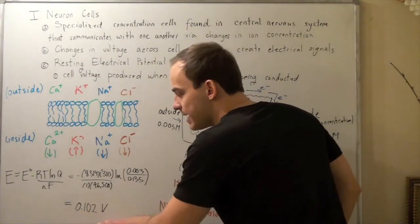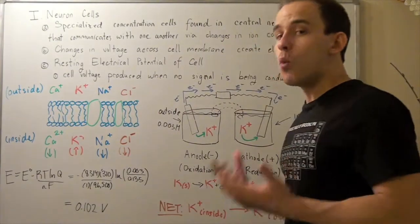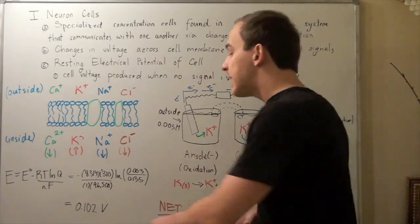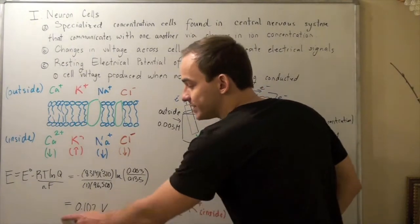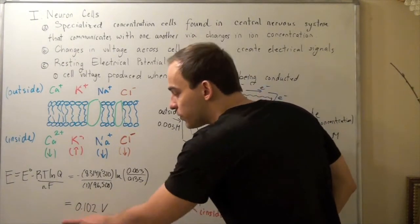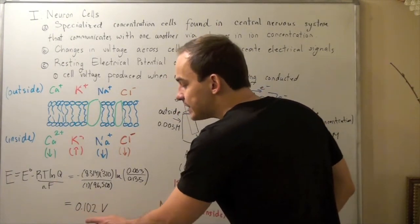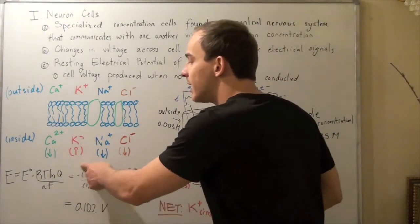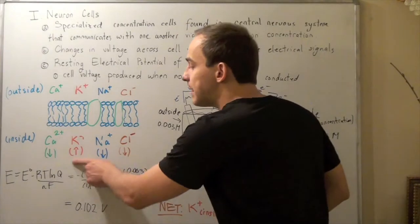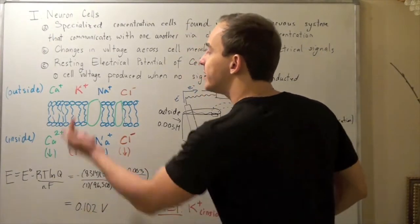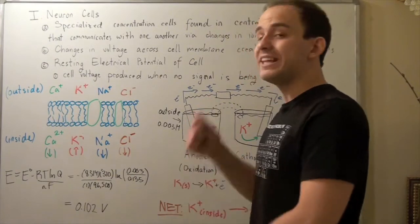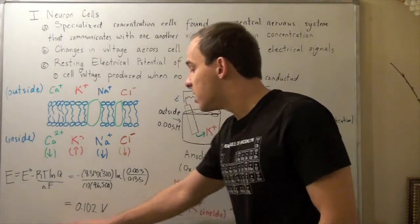Now, what this number means is that when our electrical gradient and our chemical gradient equal to this number, when they're both this number, that means equilibrium will be established between the potassium ions. And the same number of potassium ions will be going in as they will be coming out, right? So the rates will equal. And that's what this number means.